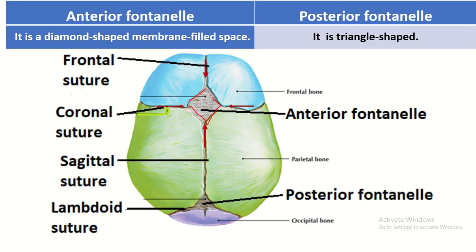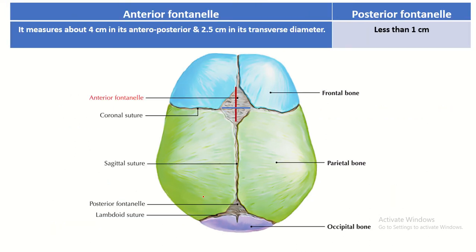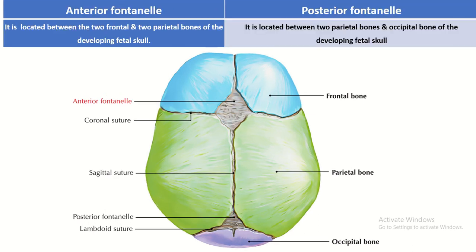The shape of the anterior fontanelle is diamond-shaped. The shape of the posterior fontanelle is triangular. The anterior-posterior diameter of the anterior fontanelle is four centimeters and the transverse diameter is 2.5 centimeters. The diameter of the posterior fontanelle is less than one centimeter.